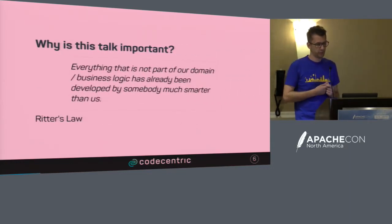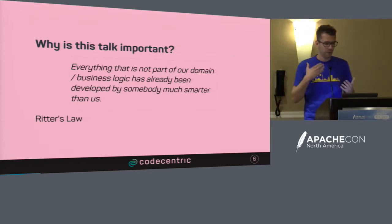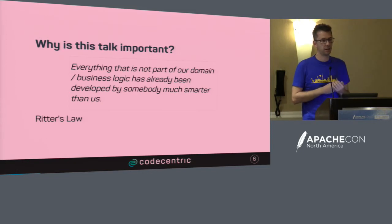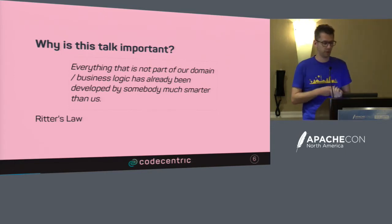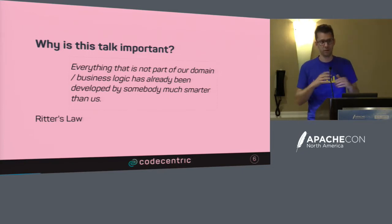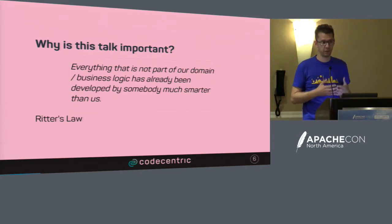Why is this talk important? This is what I call Ritter's Law - I made it up myself. Everything that is not part of our domain or business logic has already been implemented by something much smarter than us. Every technical plumbing detail has already been implemented. Parsing CSV files? Already implemented. You don't have to implement your own CSV parser or your own networking protocol. Our duty is to solve business problems and focus on that.